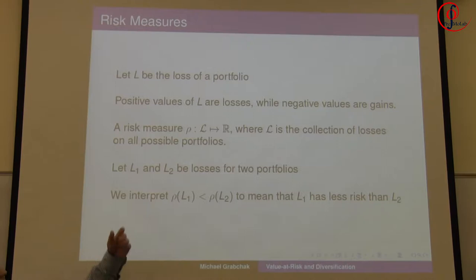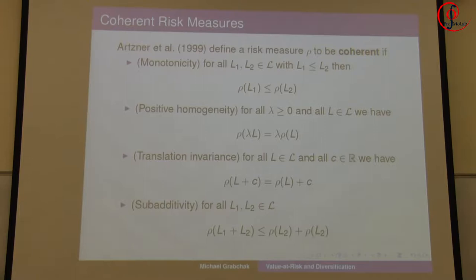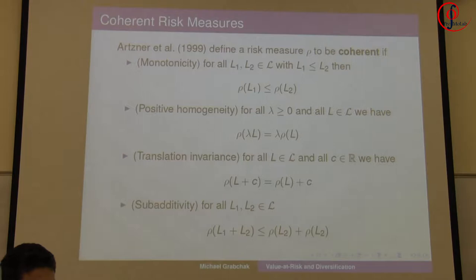The risk measure maps the class of all possible losses into the real line. L1 and L2 are random variables. The inequality L1 less than or equal to L2 is almost surely, and the risk measure of L1 is less than the risk measure of L2. The risk usually corresponds to the underlying distribution. For example, if you have a shock and aftershock, the destruction from both combined will be bigger than from them separately because some buildings will be partially destroyed by the initial shock.